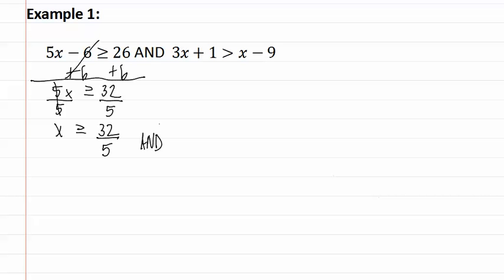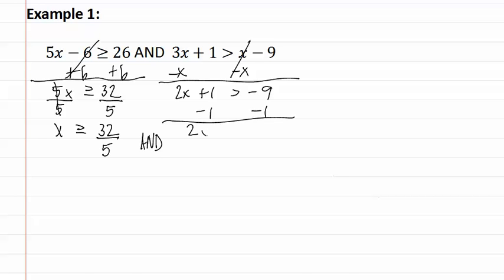And then let's solve the second one. By subtracting x from both sides, giving us 2x plus one is greater than negative nine. Then subtracting one from both sides gives us 2x is greater than negative ten. Dividing both sides by two, we get x is greater than negative five.